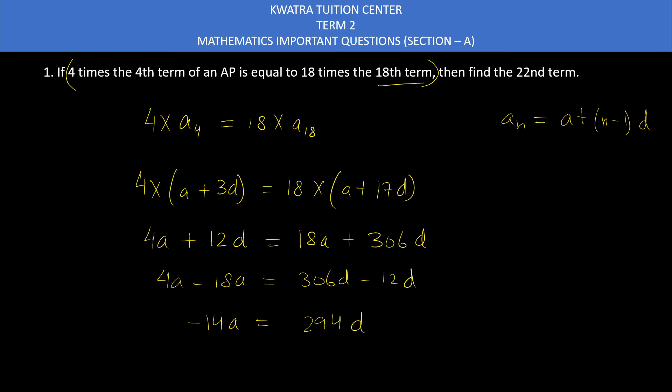Then you can cancel 14 and 294. If you divide 294 by 14, you will get 21. This will be 1, this will be 21. So it is minus A equals 21D.